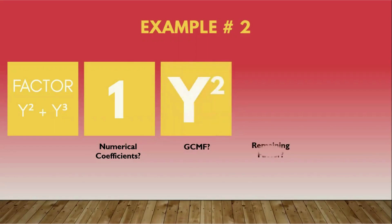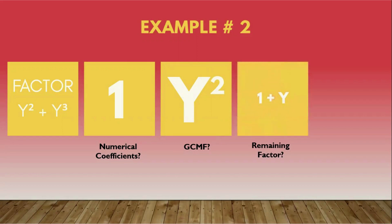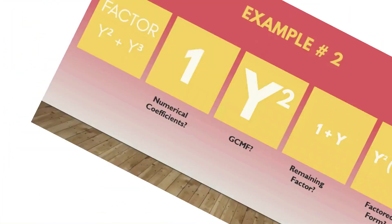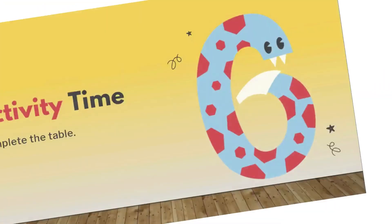So what would be the remaining factor if we divide y squared plus y cubed by y squared? The answer would be 1 + y. And the factored form is y squared times the quantity (1 + y).